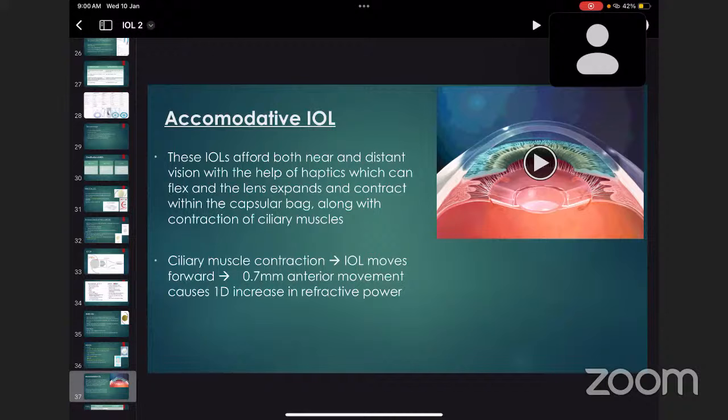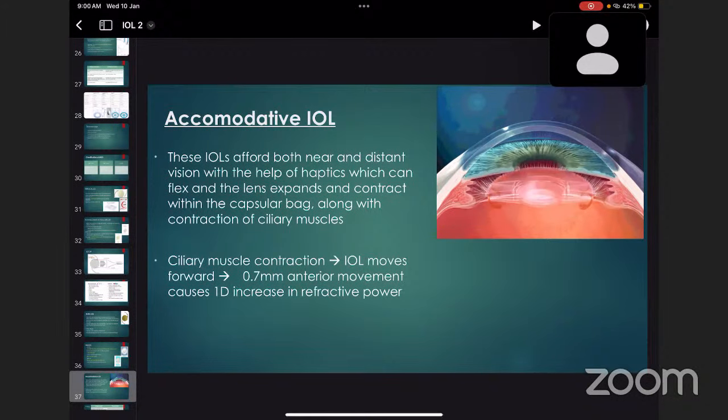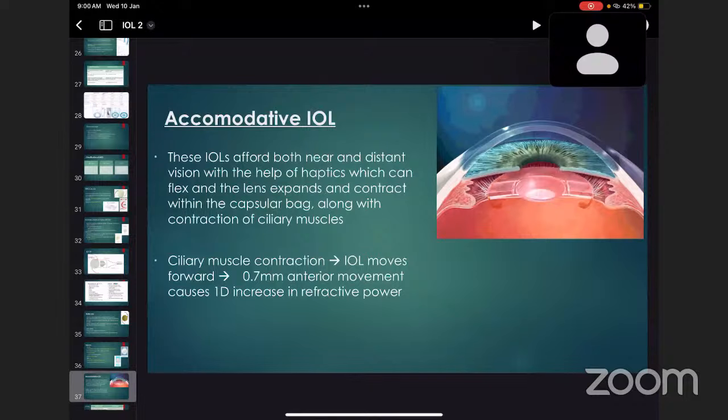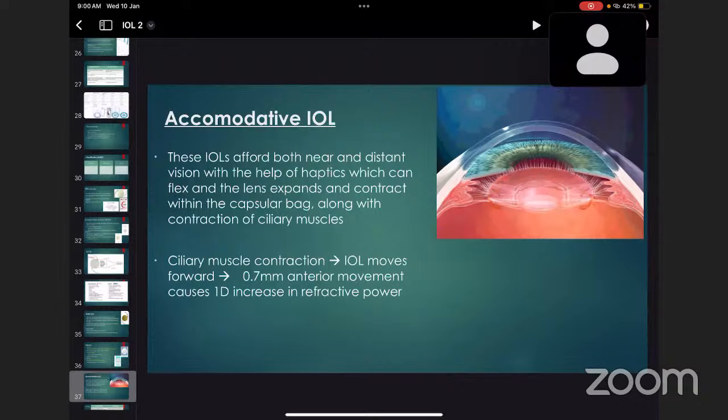Accommodative IOLs: these IOLs afford both near and distance vision with the help of haptics which can flex. As we can see in the image, it flexes and the lens expands and contracts within the capsular bag along with contraction of ciliary muscles. Whenever there is ciliary muscle contraction, IOL moves forward. There's 0.7 mm anterior movement which causes one diopter increase in refractive power.